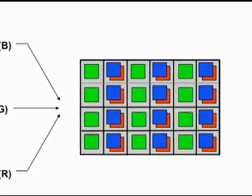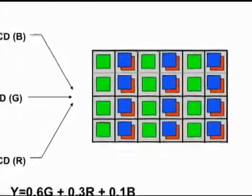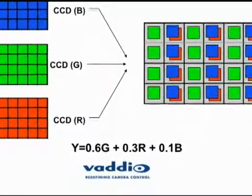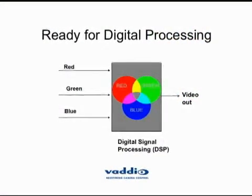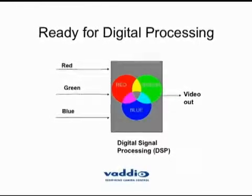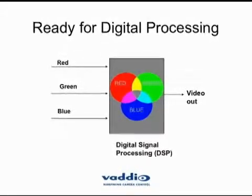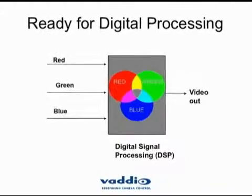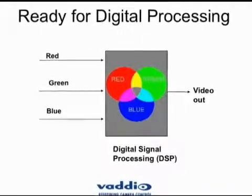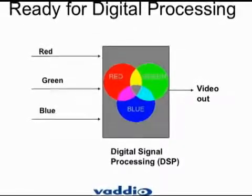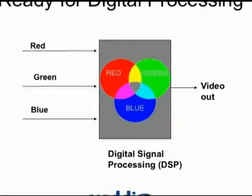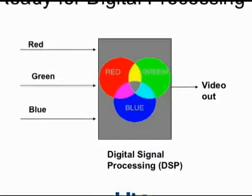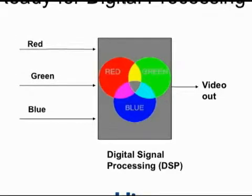The luminance is then obtained from these three basic colors, as shown in the equation, with 60% green, 30% red, and 10% blue. Getting ready for digital processing, red, green, and blue are then fed to a DSP — a digital signal processor. Most cameras have this processor, and today probably all of them. It's processed in the digital domain, compensated for dynamic range and color reproduction, and then we get video output.